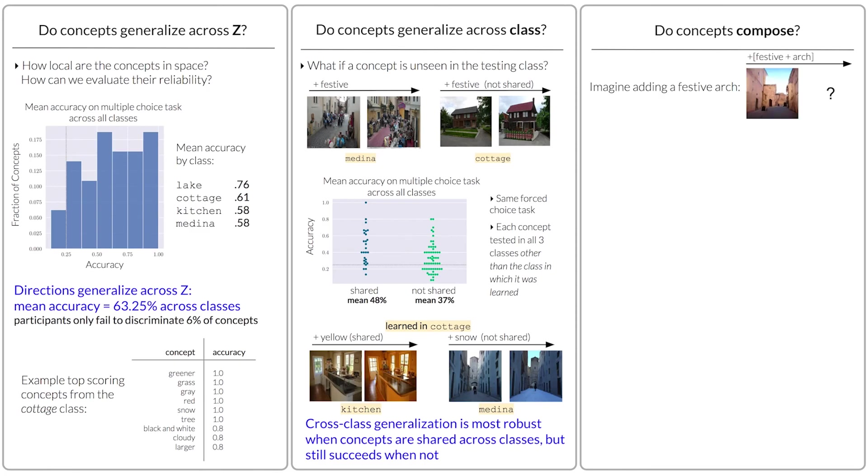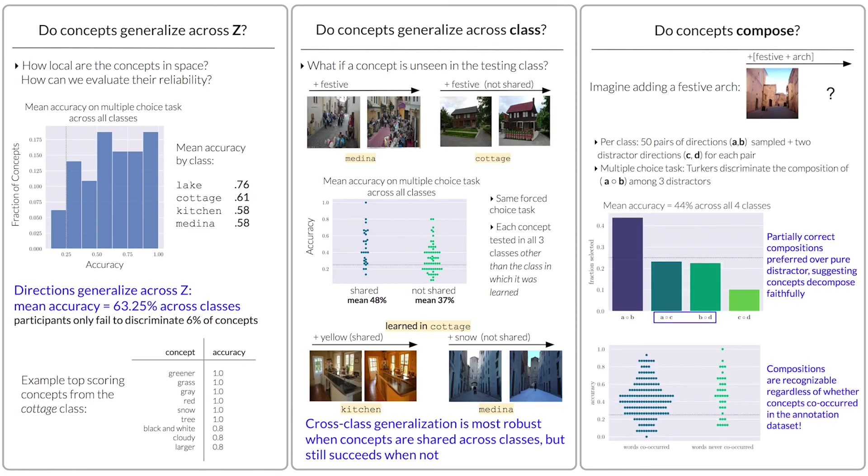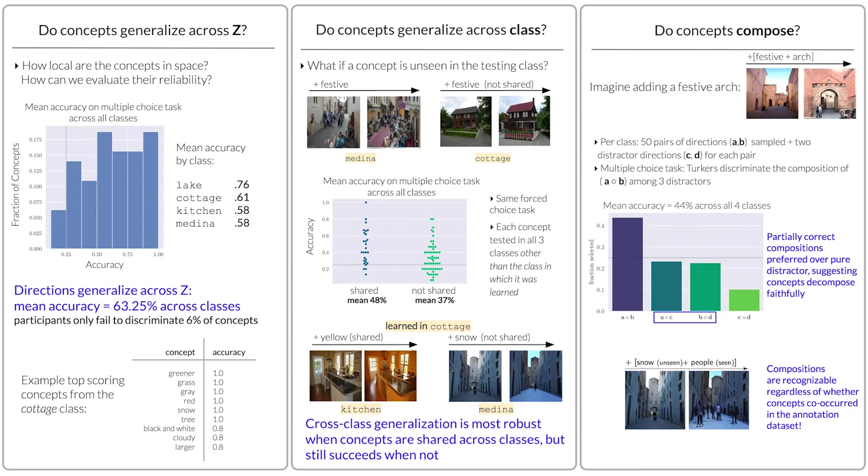Finally, we show that concept compositions are recognizable by subjects, regardless of whether the concepts co-occurred in the annotation dataset. This suggests that our vocabulary is flexible, and can be used to explore surprising compound concepts that might not normally occur.